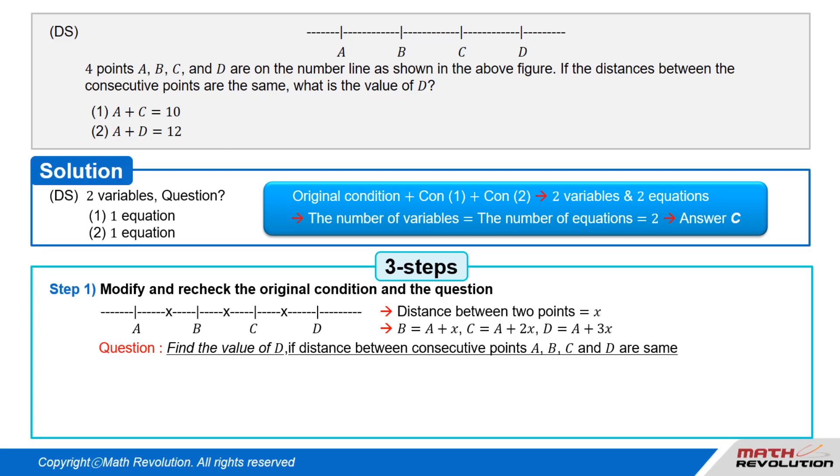Let the distance between any two points be x, so B equals A plus x, C equals A plus 2 times x, and D equals A plus 3 times x, as shown in the above figure. Good. This is an excellent approach.